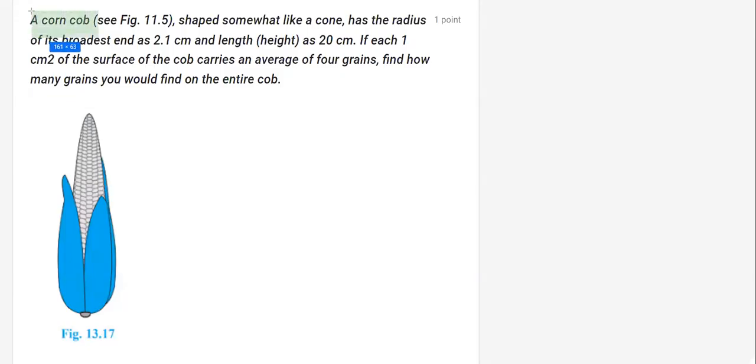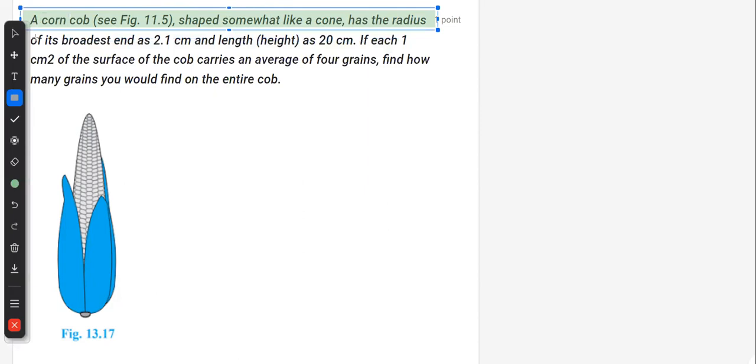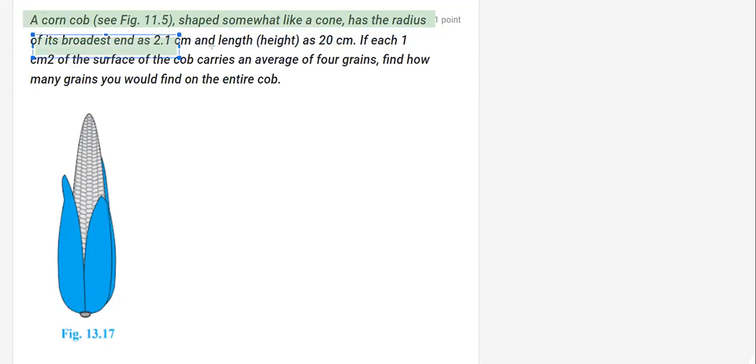The question says that there is a corn cob, as you can see in the figure, shaped like a cone, and has the radius of its broadest end, that means the bottom, as 2.1 centimeters, and the length, which is the height, is 20 centimeters.